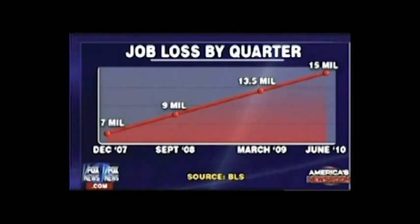Another tactic is changing trends by sub-sampling x-values. Here's a graph showing unemployment rates over time — December 2007, September 2008, March 2009, June 2010 — just cherry-picking four data points and putting them up there. Notice at the top it says 'job loss by quarter,' but between the first two plot points that's nine months, and between the second two it's only six or seven months. The graph is literally making no sense — just there to give people the wrong idea about the facts.